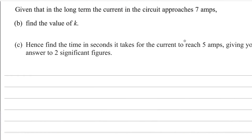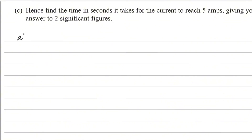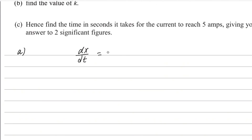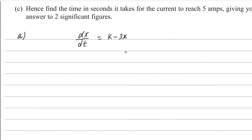Consider this equation to solve the first part: dx/dt = k minus 3x. By the integration method, we will solve this equation. For that, you have to separate the variables — collect x variables on one side and t on the other side. This is called separating variables.